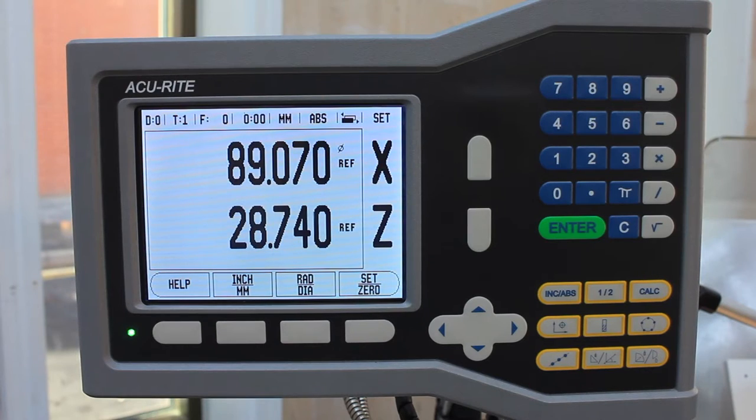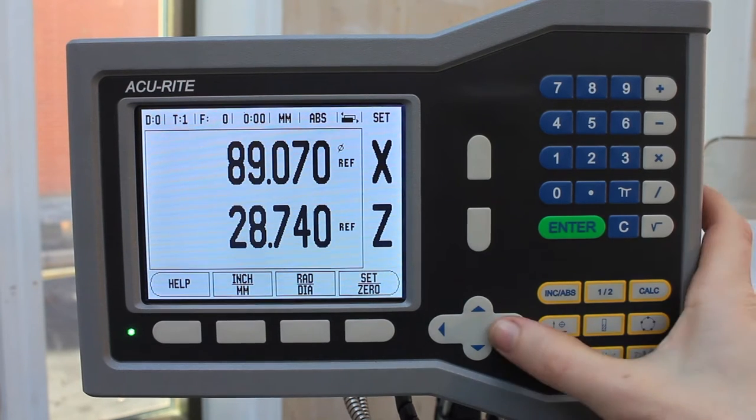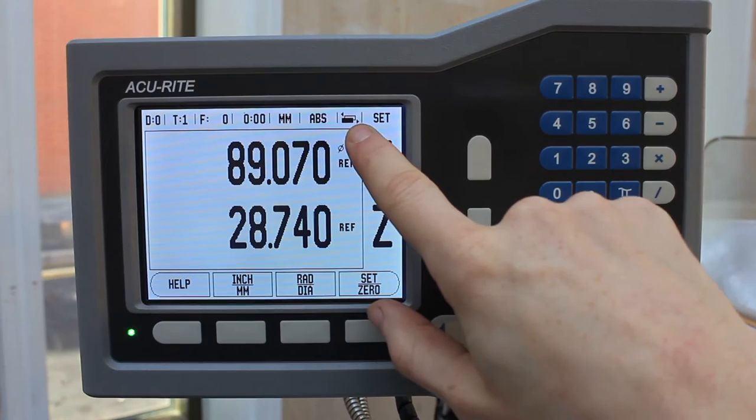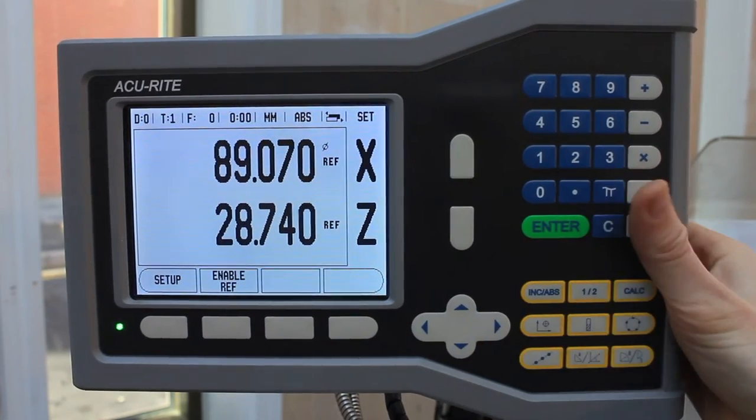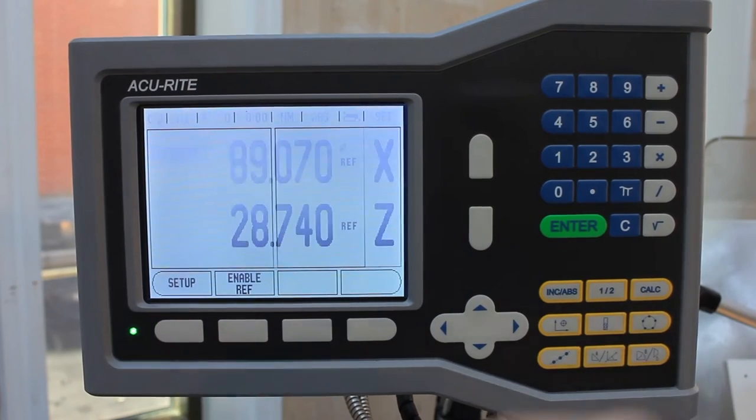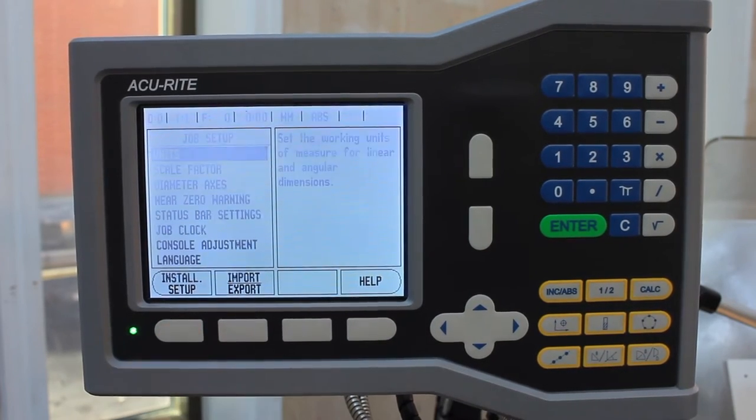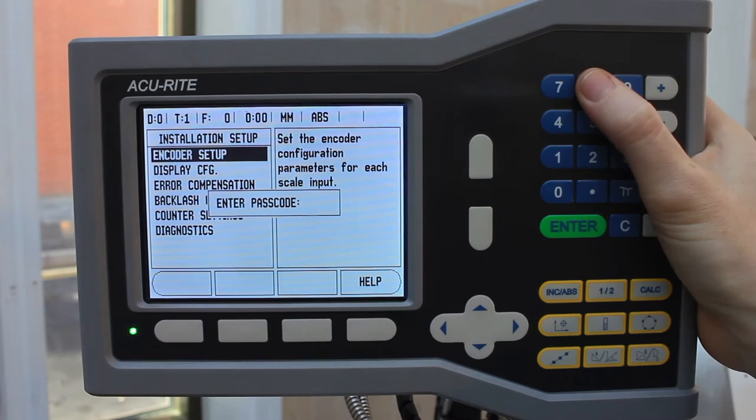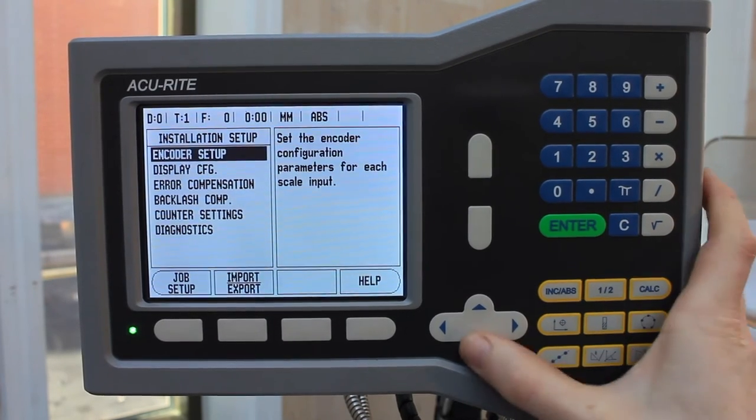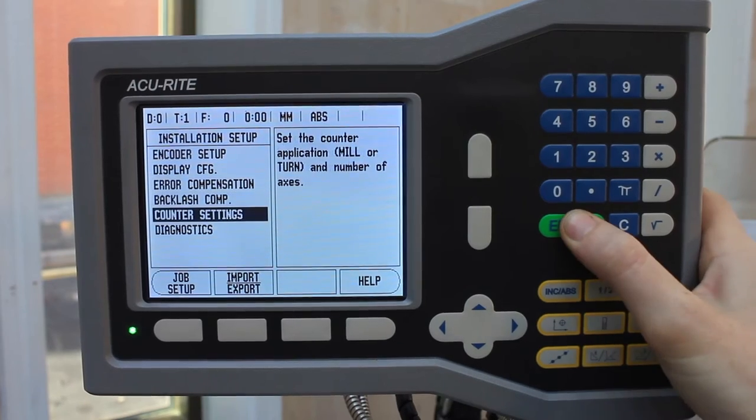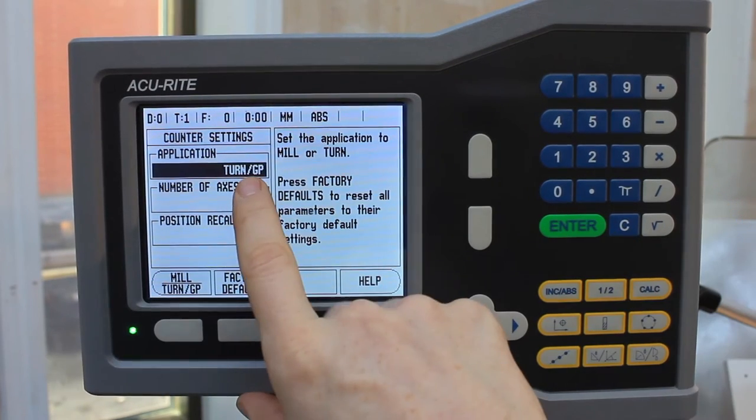If you did need to swap over the DRO to a mill, we can look at the soft key icon here, move across to the setup menu, install setup, enter the password which is default to 8891, and go into character settings where we can select either turn, lathe control or the mill.